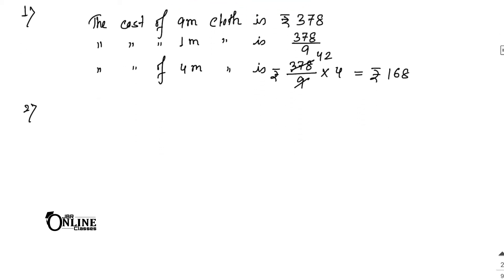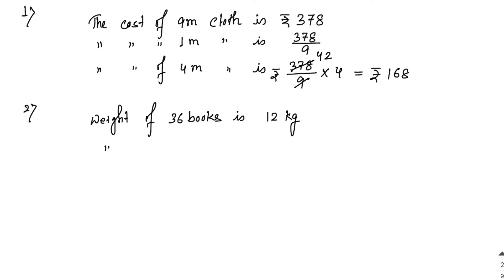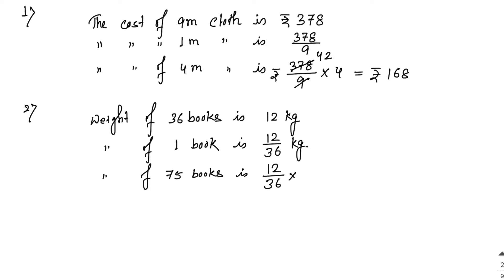Sum number 2: the weight of 36 books is 12 kg. Write down — weight of 36 books is 12 kg. Next, weight of 1 book is 12 by 36. Last line: weight of 75 books is 12 by 36 into 75. Simplifying: 12 and 36 cancel to give 1/3, and 3 times 25 is 75, so the answer is 25 kg.